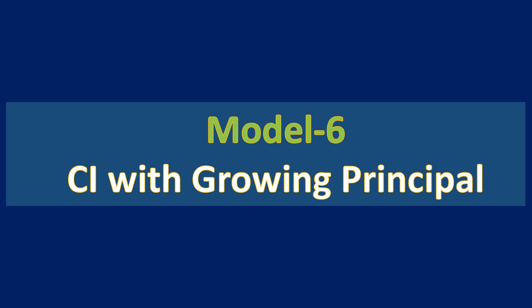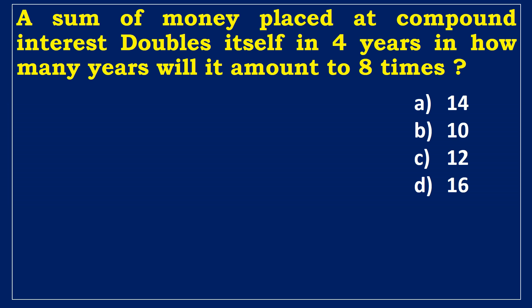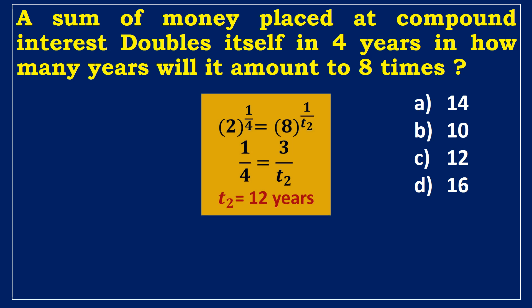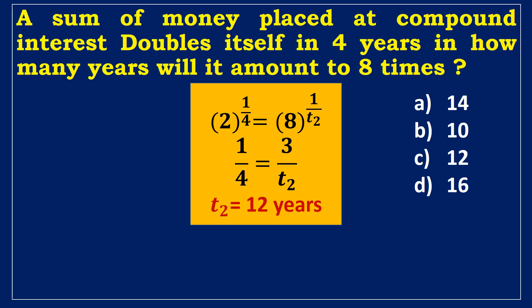Model 6: Compound interest with growing principal. Example 1: A sum of money placed at compound interest doubles itself in 4 years. In how many years will it amount to 8 times? Setting up the equation: 2^(1/4) = 8^(1/t₂). Simplifying, the required time is 12 years.